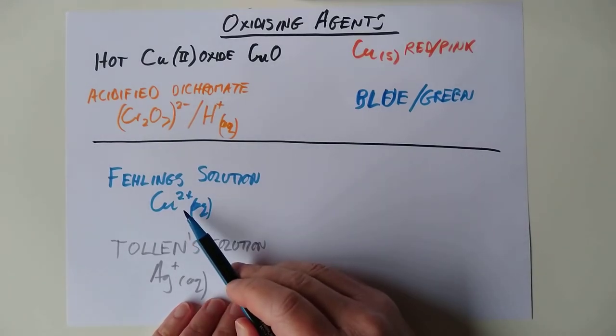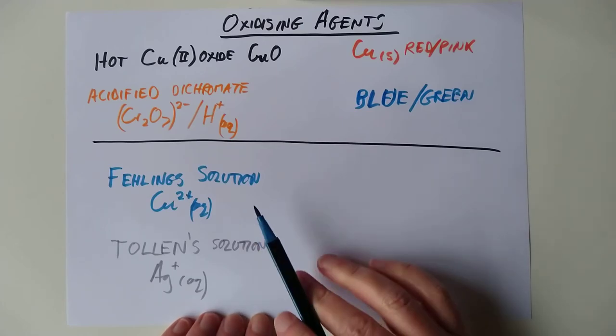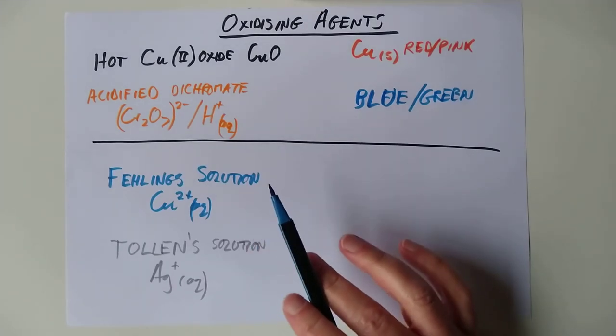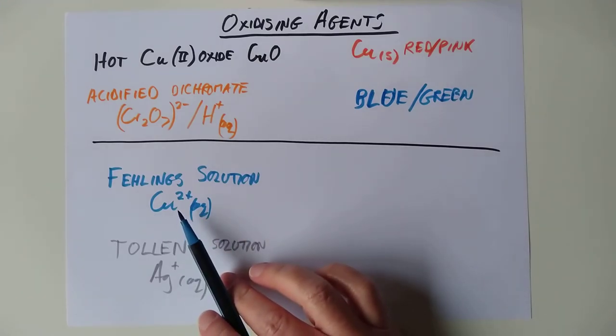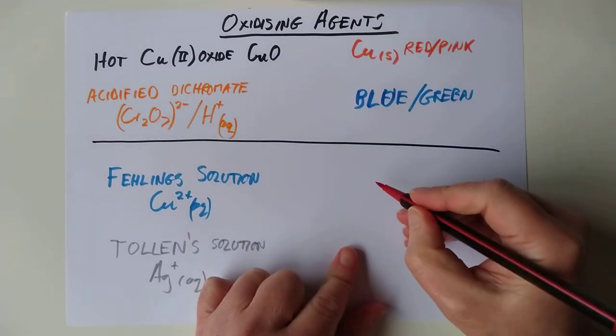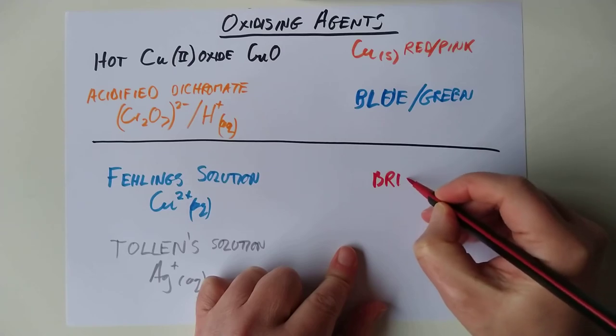Fehling's solution. These two are used to tell the difference between aldehydes and ketones. Remember, aldehydes oxidize and ketones don't. Fehling's is actually copper-2 ions, and you change into copper-1 ions which precipitate out as a brick red precipitate.